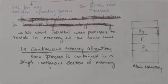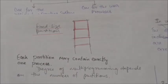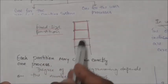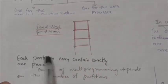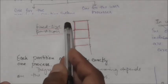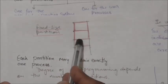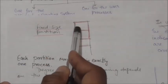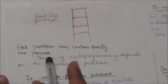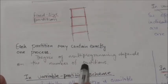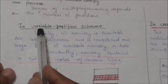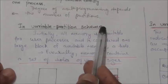In contiguous memory allocation, one of the simplest methods for allocating memory is to divide main memory into several fixed-sized partitions, and each partition may contain exactly one process. In this way, the degree of multiprogramming depends on the number of partitions.